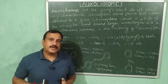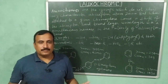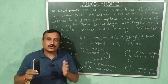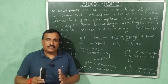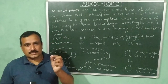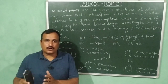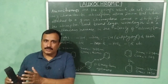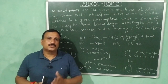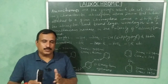Fortunately, we can increase the lambda maximum as well as the molar extinction coefficient of a chromophore by attaching certain groups — by replacing the hydrogen atoms of the chromophore. Those groups are called oxochromes.